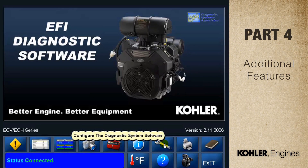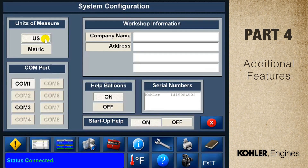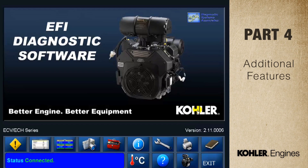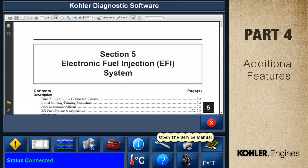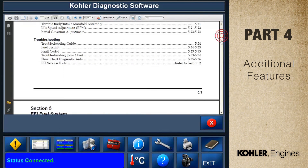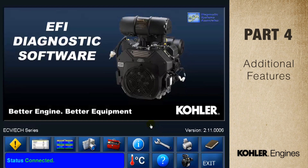The next function is the system configuration screen. The configuration screen is used to set the units of measure, workshop information, and communication port or COM port settings. Find more information on this in the user manual or help menu. Here's the print button to use when printing reports. This is the service manual icon — the service manual is a browser that gives you access to the appropriate Kohler factory service manuals. This is the unit's selection button — use it to select your units of measure for engine temp and pressure.